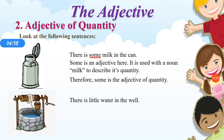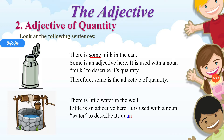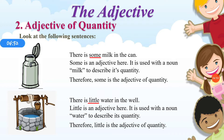There is little water in the well. 'Little' is an adjective here. It is used with the noun 'water' to describe its quantity. Therefore, 'little' is the adjective of quantity. It describes about the water in the well.